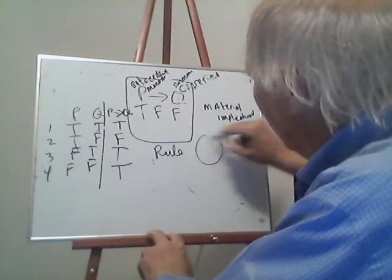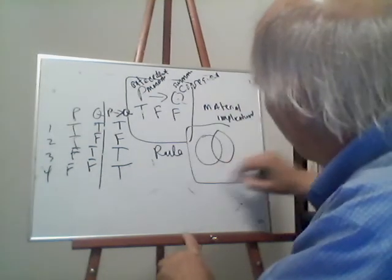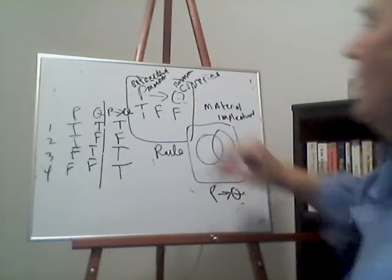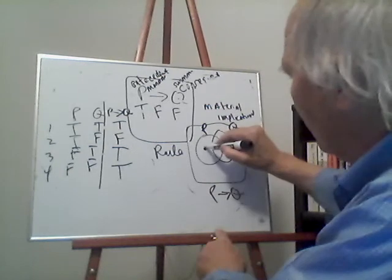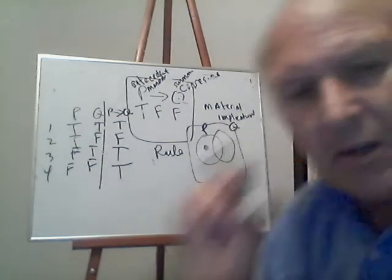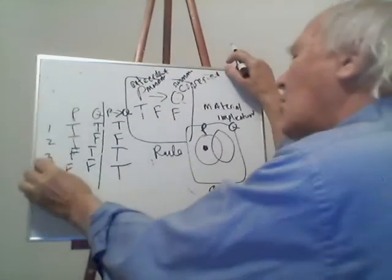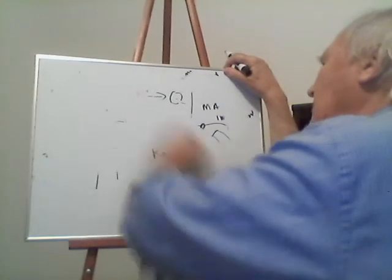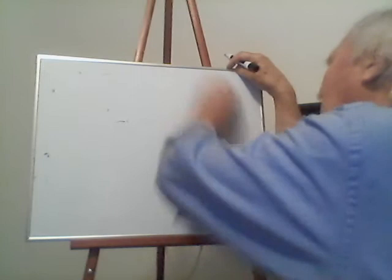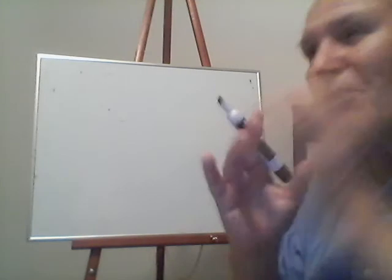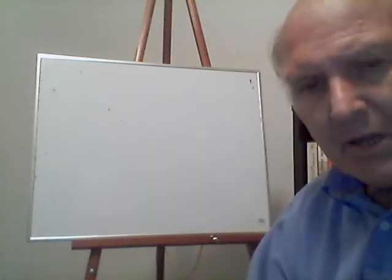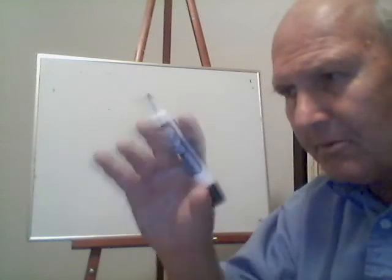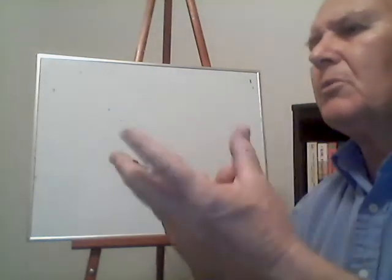Now I want to show you how to diagram an argument in propositional logic, because ultimately that's what this course is about — how Venn diagrams can be used to diagram arguments in propositional logic. So far I've been explaining how propositional logic works: the letters, the logical connectives, and so on. Now I want to show an actual argument.